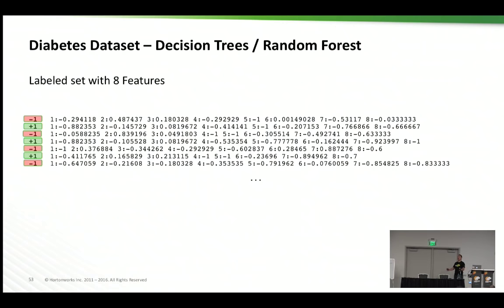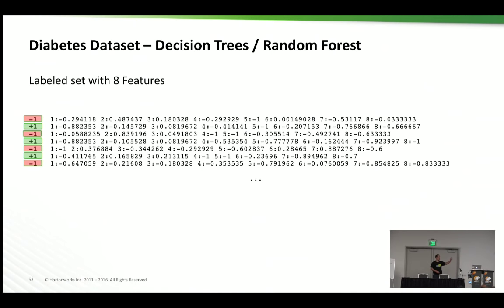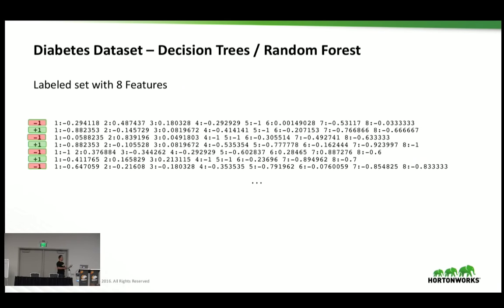The actual lab uses a diabetes dataset. This is a supervised learning example: the label is either negative one or positive one — diabetes or not. The dataset contains eight features. The goal is to train on part of the data and use the rest to measure prediction accuracy on data the model hasn't been trained on.